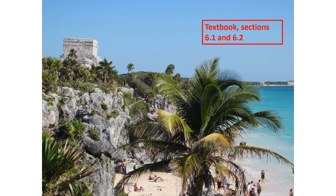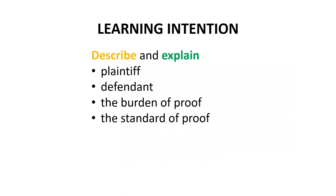When you have finished watching this video, please make sure that you read the pages from the textbook referred to on this slide, and if you find any additional information from that reading that you think is useful, supplement your Cornell notes with that additional information. Our learning intention for this video is set out on this slide — please write this learning intention down in your Cornell notes. The learning intention is that you need to be able to describe and explain the following key concepts in the Victorian civil justice system.